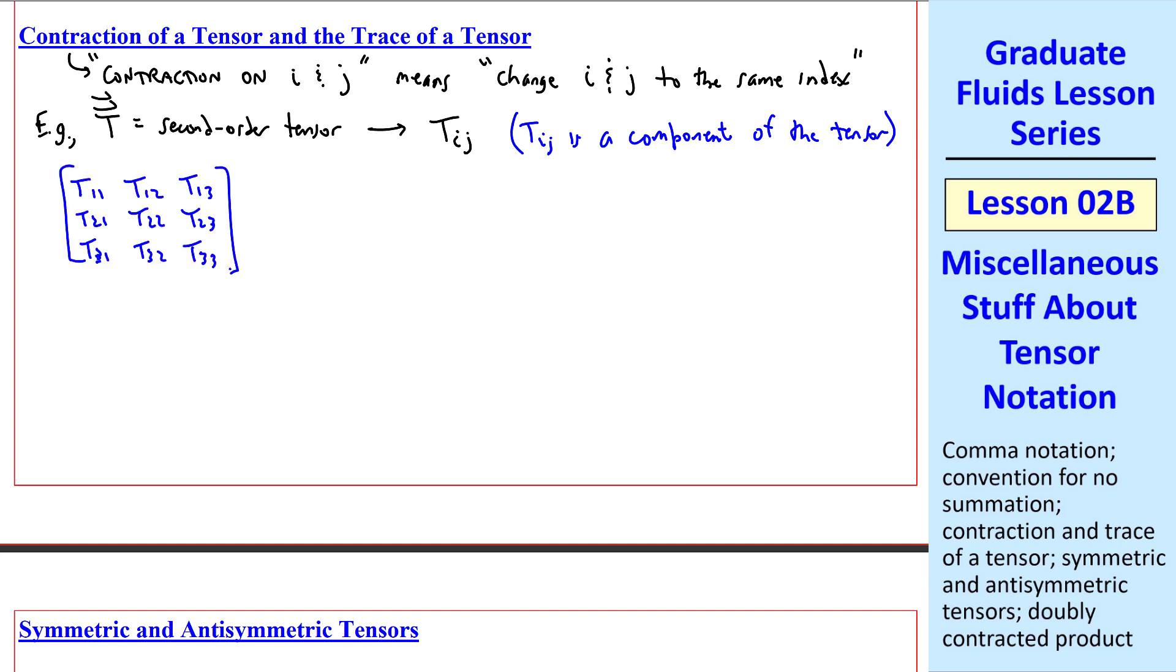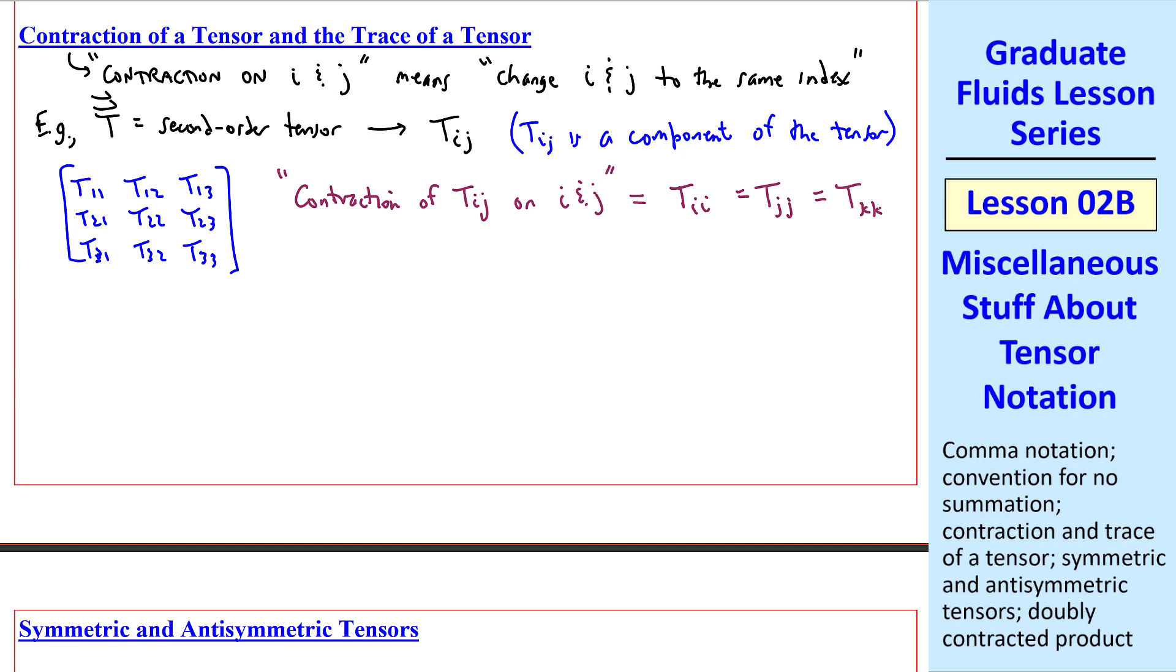Keep in mind that tij is simply a component of the tensor, where there are nine components here as written out in matrix form. So if we say contraction of tij on i and j, that means we change i and j to the same index. We can use i and get tii, or we can use j and write tjj. Or we can pick some other index, like k, and sum over k instead.